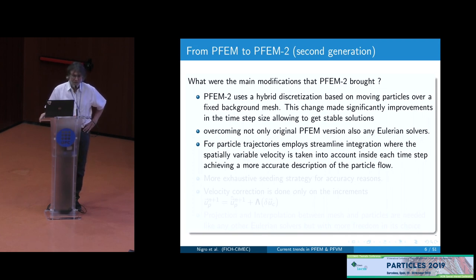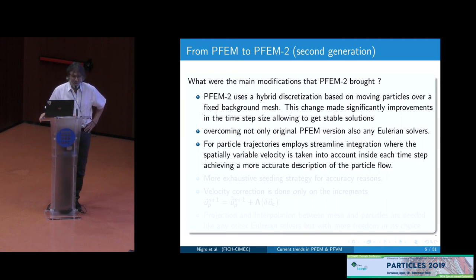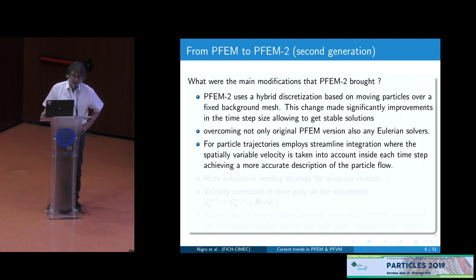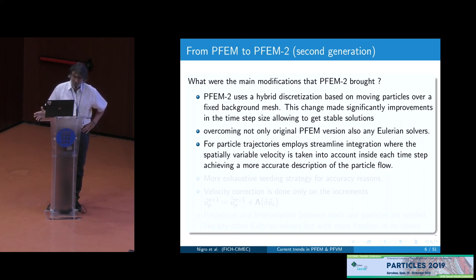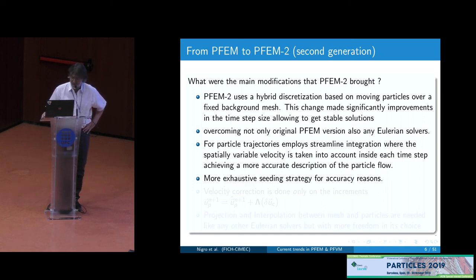For the particle integration, we use streamline integration. This kind of integration is more accurate than Euler or forward Euler integration, or another kind of integration that uses a fixed velocity field. The exact solution should be to get the trajectory of the particles, but the trajectory is very difficult to get because you have to change the velocity field with the solution. Our streamline approach is an approximation to the trajectory that is better than first order for the advection.